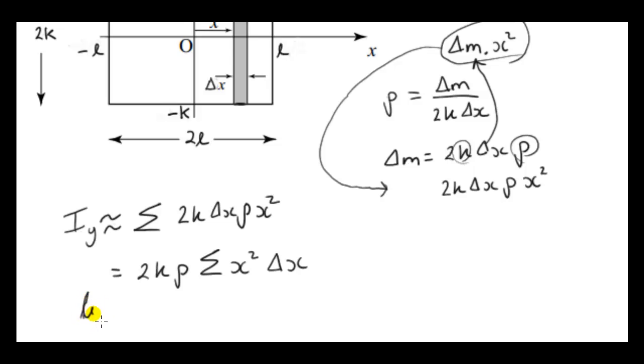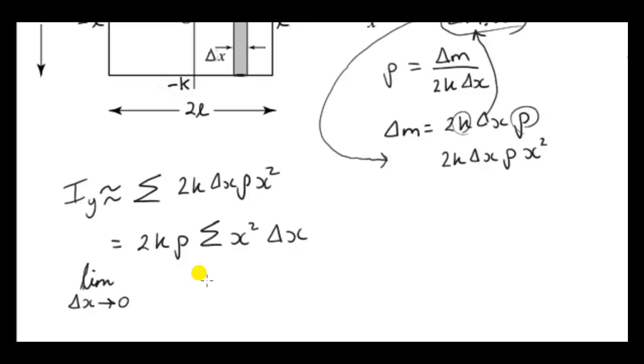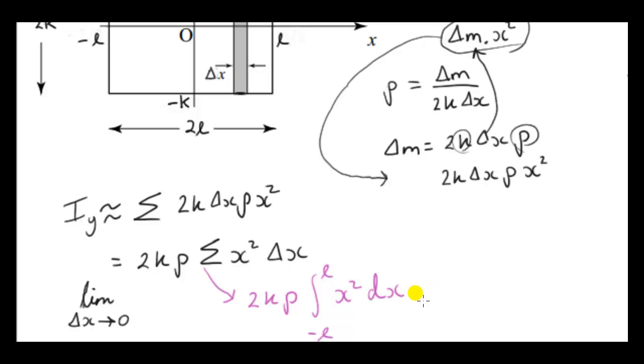So if we take the limit as delta X approaches zero, the strip becomes infinitely thin. And we don't have to worry about the distance of the strip to the Y axis. The strip becomes infinitely thin, we just essentially have a line. So distance is just given by the X position or X coordinate of this point. So we take this limit. The 2K rho is just a constant factor that I took outside the summation sign. Summation sign becomes an integral, and we're integrating from minus L to plus L, x squared dx. When delta X approaches zero, we replace the delta X with dx.